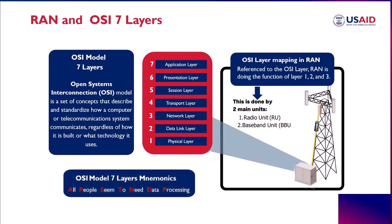Sometimes it's hard to memorize the sequence of the OSI model's seven layers, so we use mnemonics. If you're starting from the Application layer down to the Physical layer: 'All People Seem To Need Data Processing' — Application, Presentation, Session, Transport, Network, Data Link, and Physical layer.